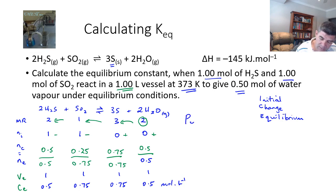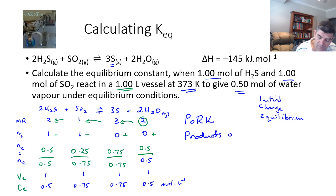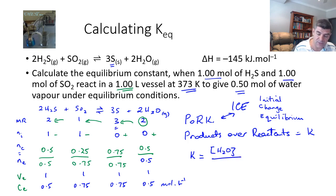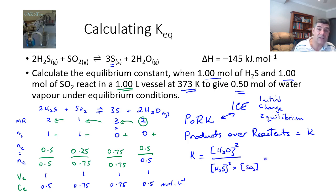Now we need to apply the PORK method — Products Over Reactants equals K. Our equilibrium expression uses the concentration of the products, which is H₂O. We do not include sulfur because it is a solid — it's treated as a constant. We raise the concentration of H₂O to the power of 2, and divide by the concentration of H₂S raised to the power of 2, multiplied by the concentration of SO₂.